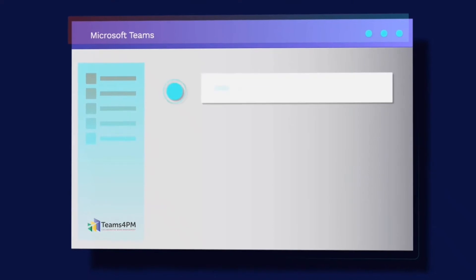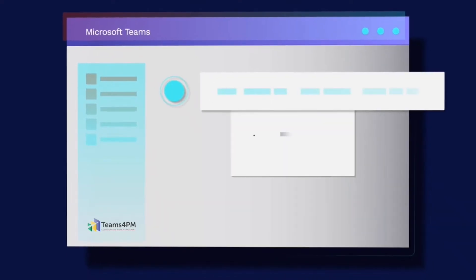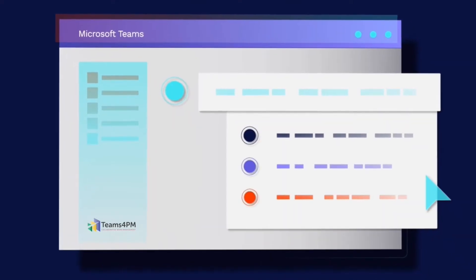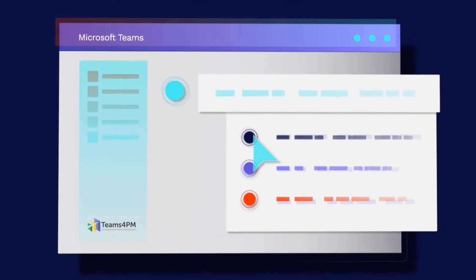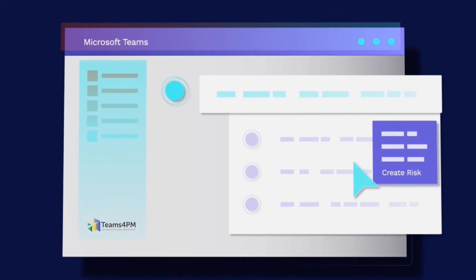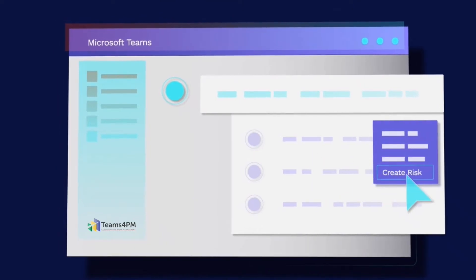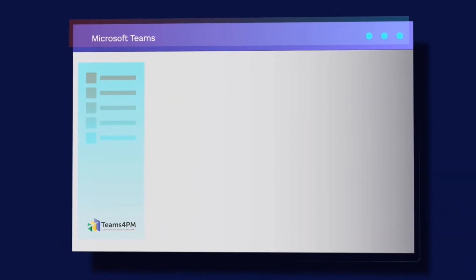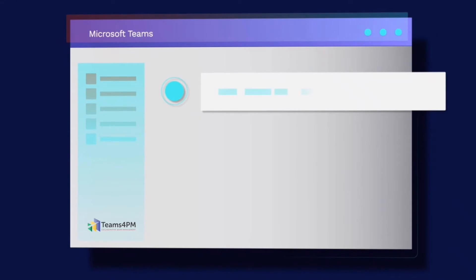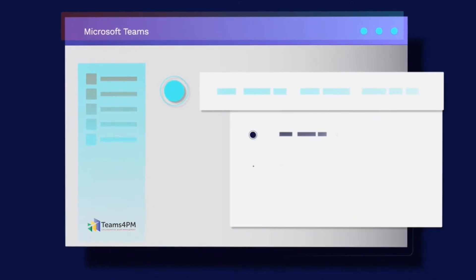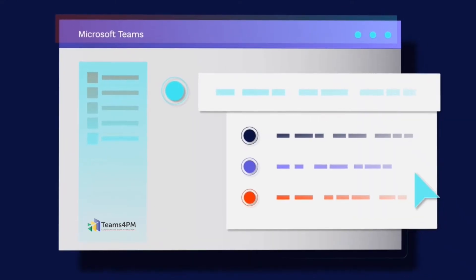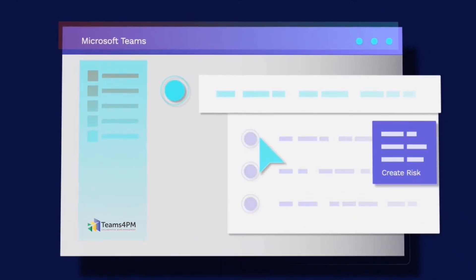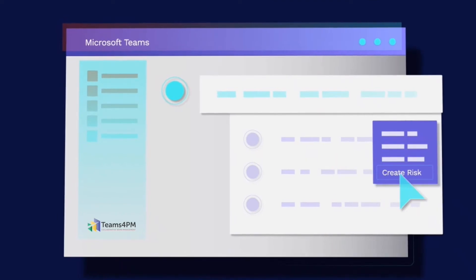Then, Teams for PM maximizes collaboration by bringing risk and issue logging right to your fingertips. With just a click, any member of the team can log a risk or issue right from the team's chat thread. Those entries go directly into reporting for executive insight and visibility.